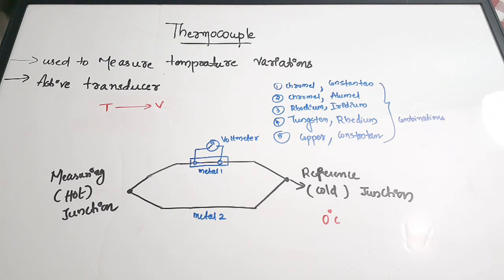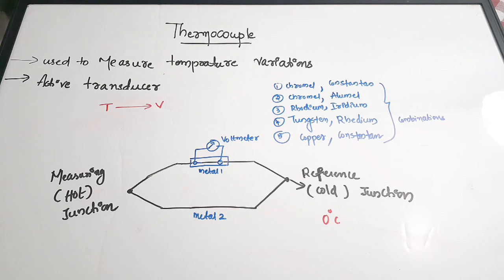In order to explain the working of a thermocouple, we generally make use of three effects: the first is the Seebeck effect, the second is the Peltier effect, and the third is Thomson's effect. These effects help us in understanding the working of a thermocouple.